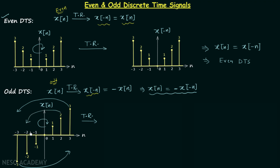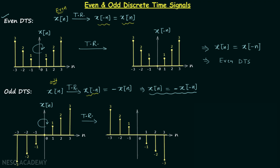Similarly, 2 will go to n equal to minus 2, minus 2 will go to n equal to 2, 1 will go to n equal to minus 1, minus 1 will go to n equal to 1, and 0 will remain at the same place. So you will have this waveform for X(-N). But we need to find minus X(-N) — we have obtained X(-N) but we are required to find minus X(-N), which means we need to perform amplitude reversal as well.